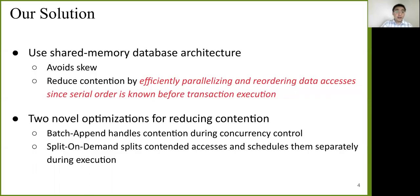So our solution is to use a shared memory database to avoid skew, and then we can reduce contention by efficiently parallelizing and reordering data accesses. And we can do this because in deterministic database, serial order is known before transaction execution. Based on this, we propose two novel optimizations for reducing contention. We call them batch append and split on demand. Batch append handles contention during initialization. Split on demand splits contended accesses and schedules them separately during execution.